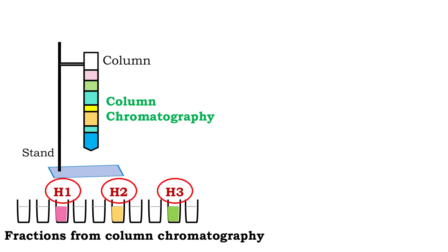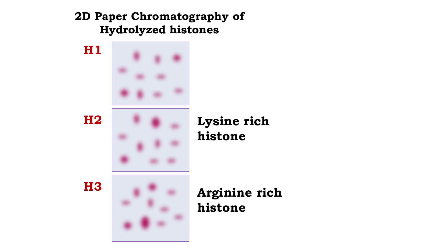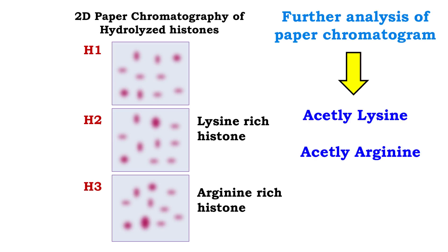When scientists first purified histones by column chromatography, they were curious to explore the newly purified proteins. The purified histones were hydrolyzed by acid and their amino acid composition was analyzed by paper chromatography. The paper chromatography showed the presence of two types of histones: one rich in lysine, called lysine-rich histone, and the other rich in arginine, called arginine-rich histone. Further analysis of the paper chromatogram also showed the presence of modified amino acids such as acetyl lysine and acetyl arginine.